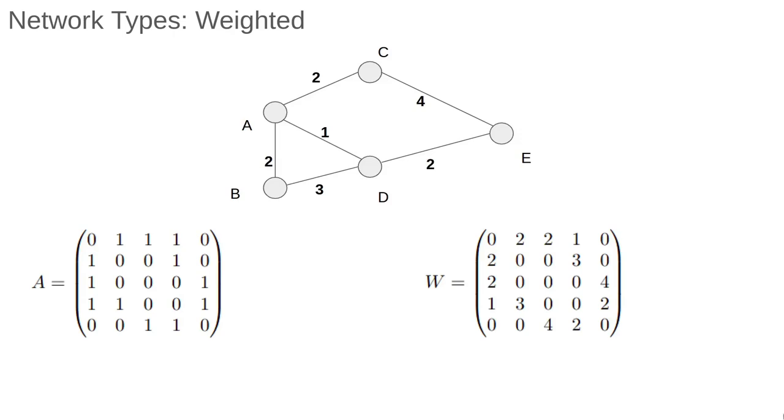As well as the weight matrix, we can still write the adjacency matrix for a weighted network, with ones wherever there is a connection between two nodes. We can define the degree as before, simply the number of connections that each node has.